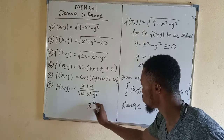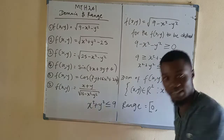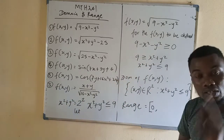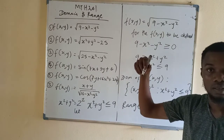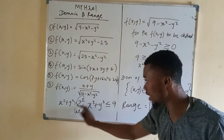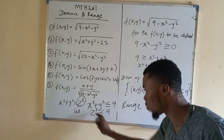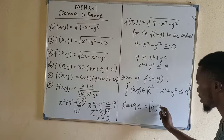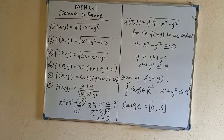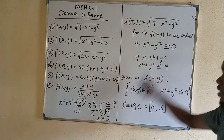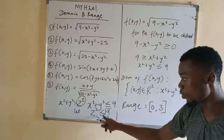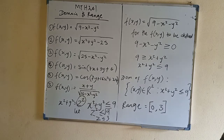We have x squared plus y squared is less than or equal to 9. By Pythagoras' theorem, let x squared plus y squared equal z squared. So z squared is less than or equal to 9. Making z the subject: z equals plus or minus square root of 9 = ±3. Taking the positive side, z is less than or equal to 3. So the range cuts at 3, inclusive. Therefore the range is [0, 3].